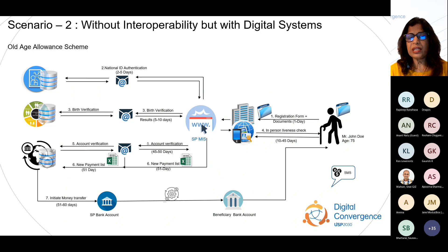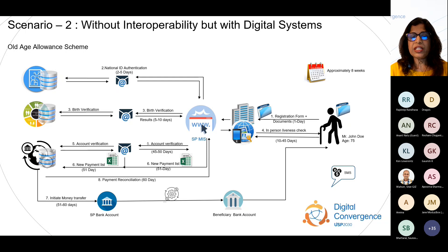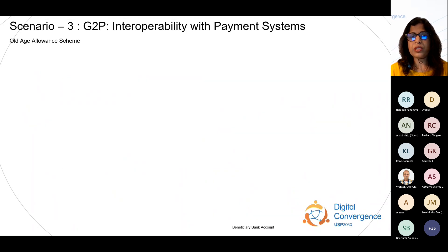Whether there's a payment switch, gateway, or direct interaction with beneficiary accounts varies greatly across countries. We are showing a simplified workflow, but in reality it is quite complicated — that's why interoperability with payment systems is not a simple thing. Reconciliation goes through various digital emails and paper-based manual channels back to the system, and this whole process definitely takes weeks, sometimes months — by which time it's nearly time for the next disbursement.